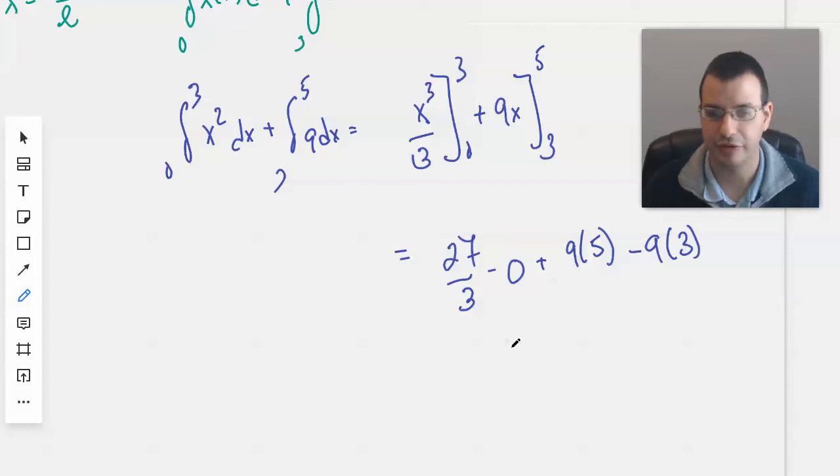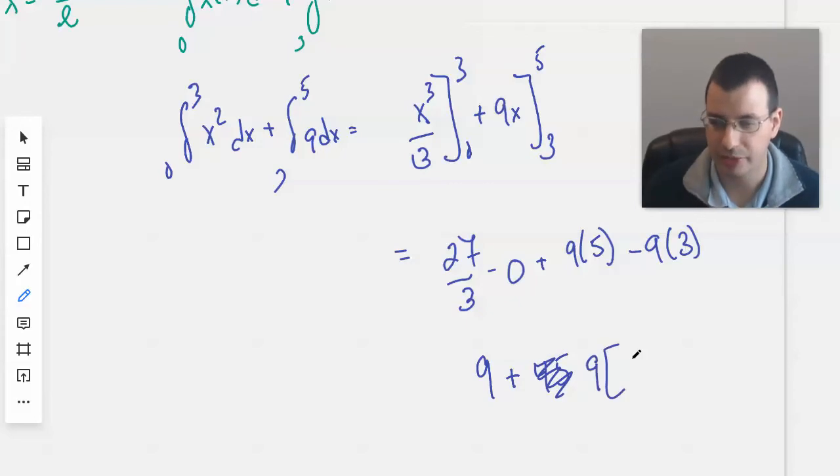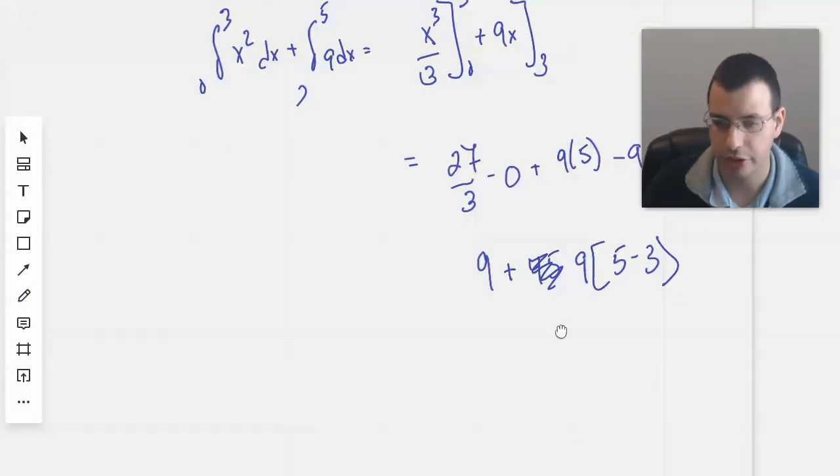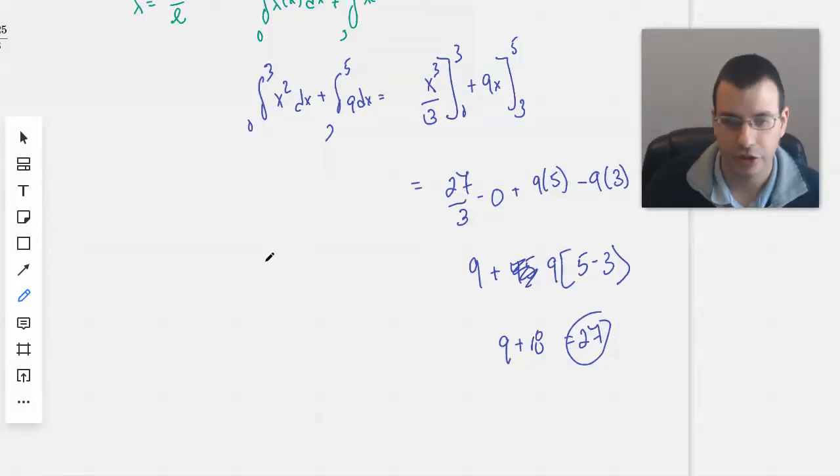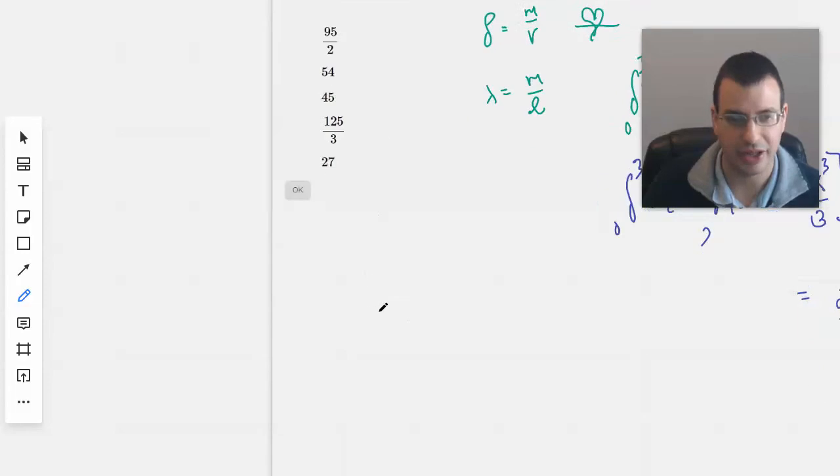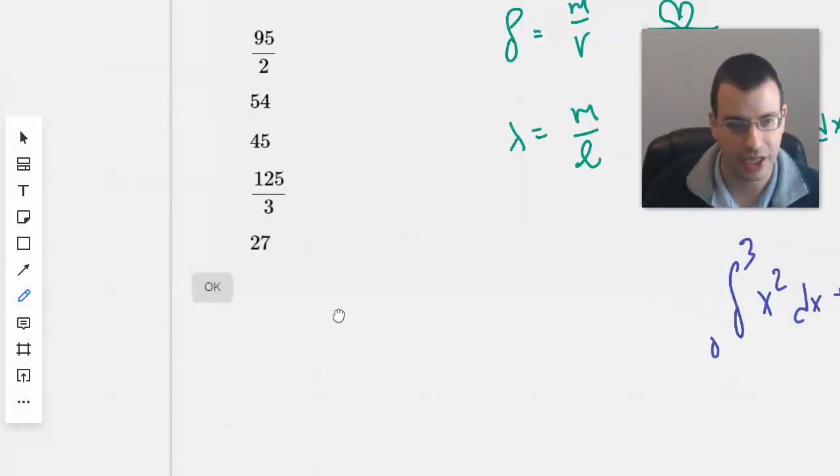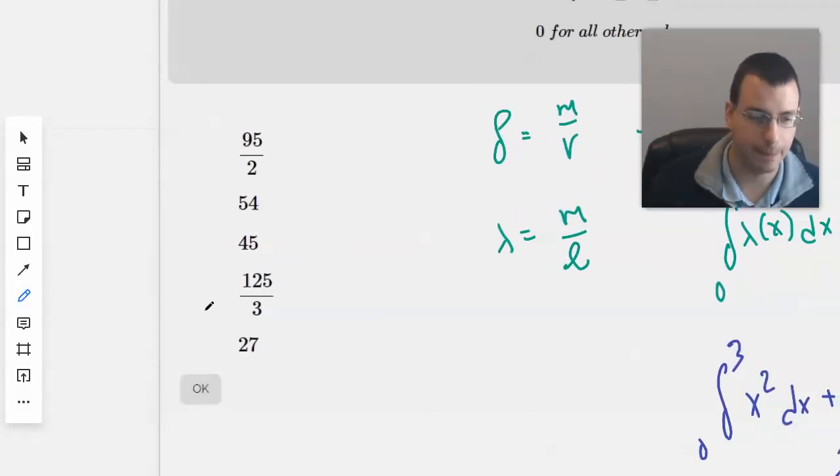27/3 is 9. I'm going to do it this way: 9 times (5 minus 3), which is 2. So we have 9 plus 18, which is 27. That's even an answer, which is convenient and good.